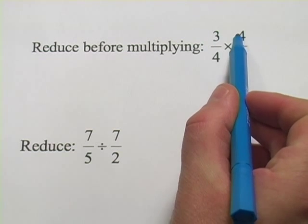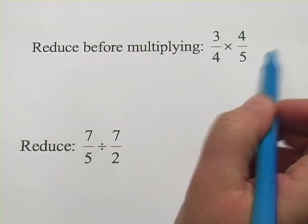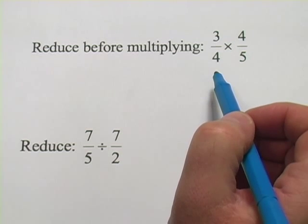I mean, we could multiply 3 times 4 and have 12, and then 4 times 5 and have 12 over 20, and then we have to reduce it down from there.